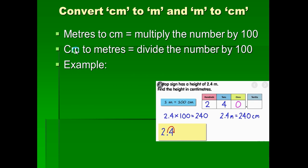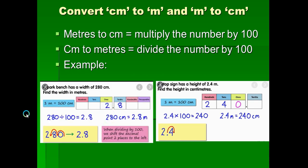To convert centimeters to meters, you divide by 100. A park has a width of 280 centimeters — find the width in meters. Since 1 meter equals 100 centimeters, we divide 280 by 100. You are moving the decimal point two places, giving you 2.8 meters.